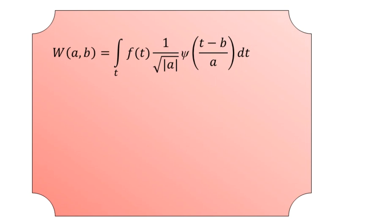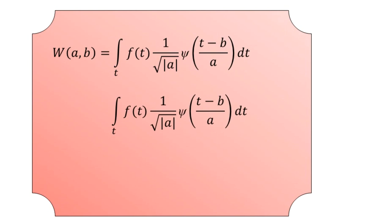J and k represent the set of discrete translations and discrete dilations. With these substitutions, the integral f(t) multiplied by 1 over square root of mod a, psi of (t minus b) divided by a, dt becomes the time integral of f(t) times 2 to the power j/2, psi of (2^j t minus k), dt. This is a function of j and k, denoted simply as W of (j, k) instead of W of (a, b).